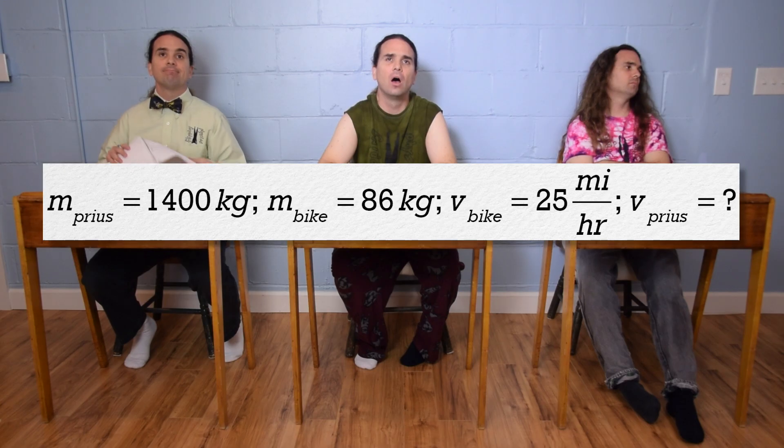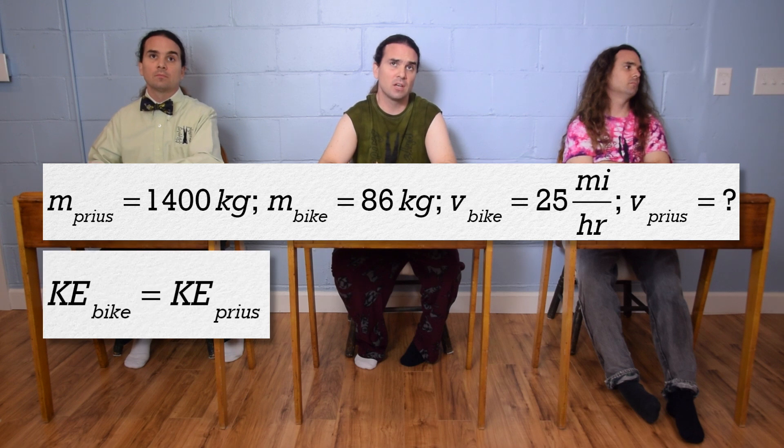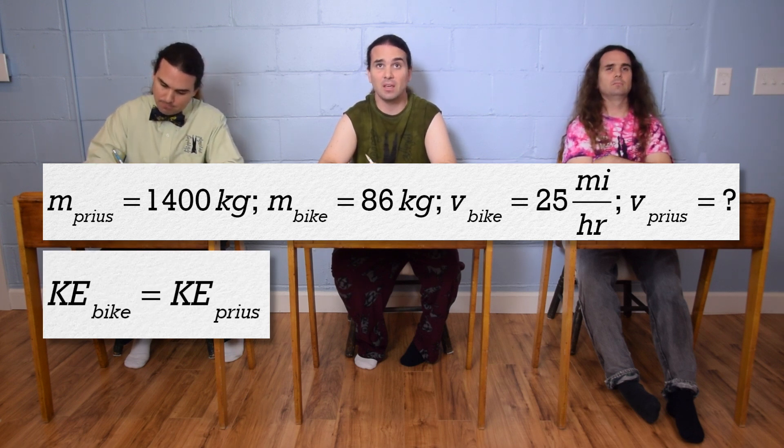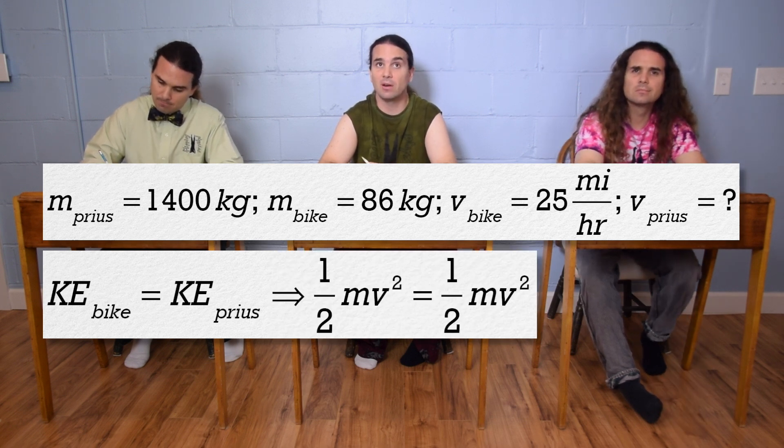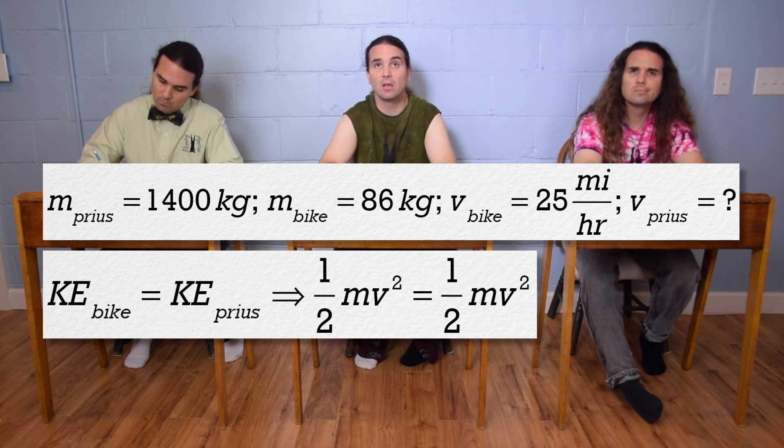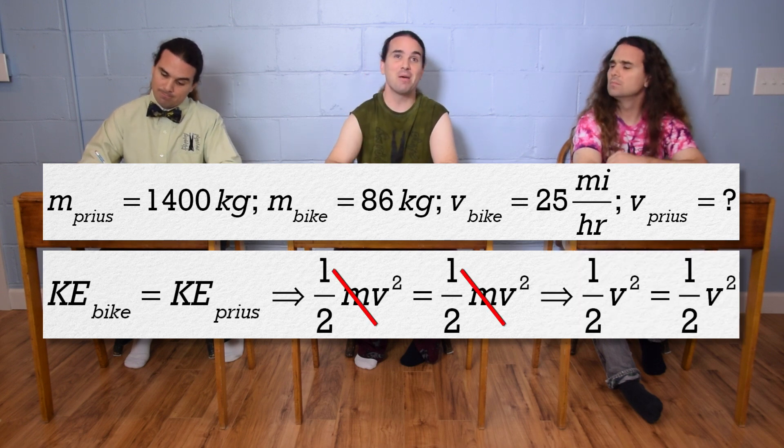Bobby, please keep going. Well, we know that two kinetic energies need to be equal. So, the kinetic energy of the bike equals the kinetic energy of the Prius. So, one-half mass times velocity squared equals one-half mass times velocity squared. Oh, everybody brought mass to the party!